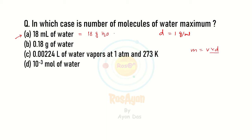That means 18 grams of water equals 1 mole of water. Now if you see options B, C, and D, they must be less than 1 mole. So the maximum number of molecules is contained in option A, 18 mL of water. The right answer is option A. Thank you.